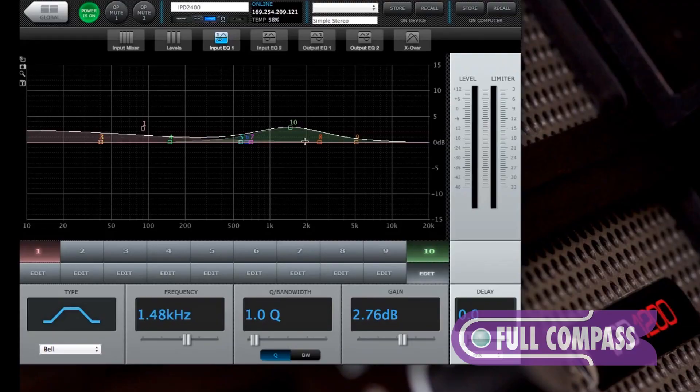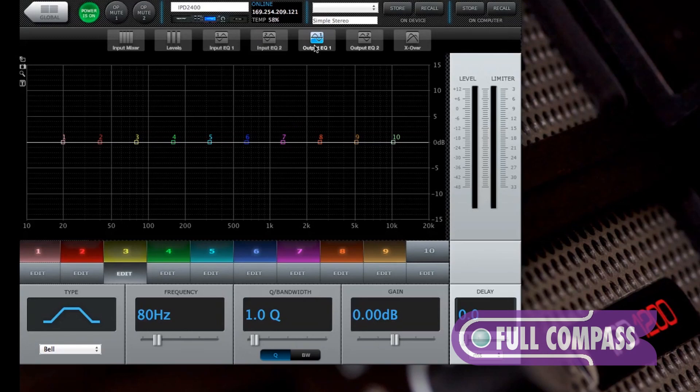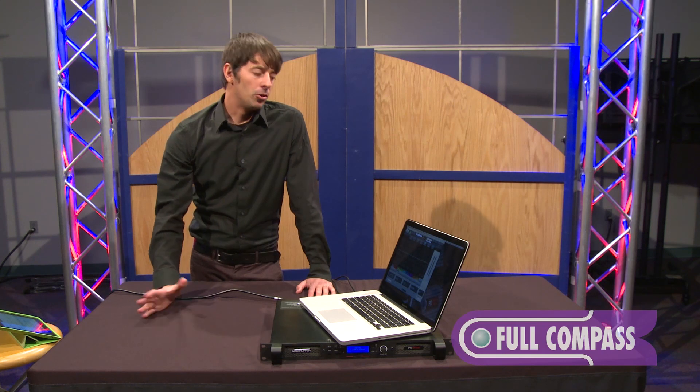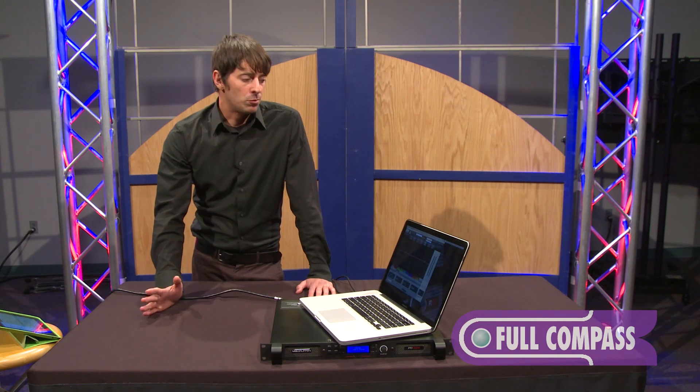So we have our, what we're looking at here is our two input EQs. So this would be the first channel. The input EQ 2 would be the second channel. And then beyond that, you have your output EQ. So you would use those depending on how you're operating the amp, it being stereo or bi-amped mode.